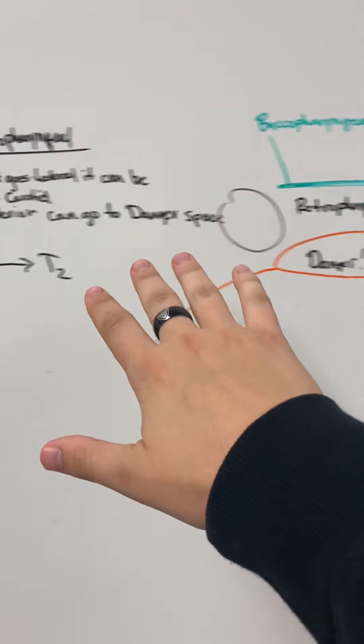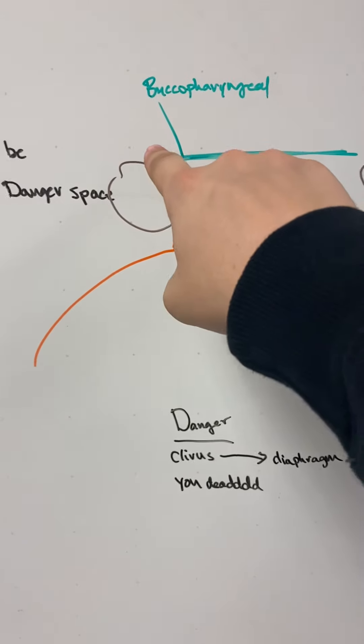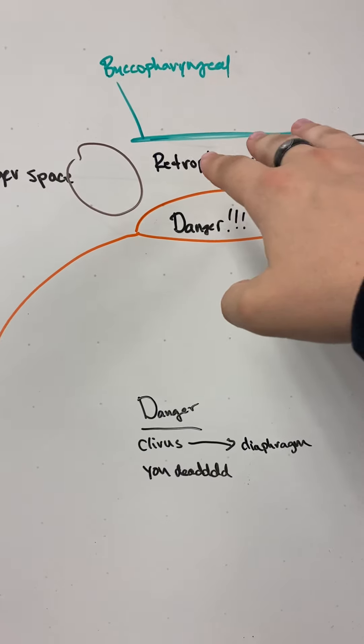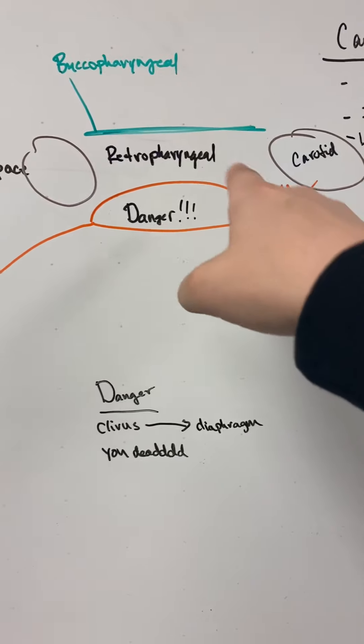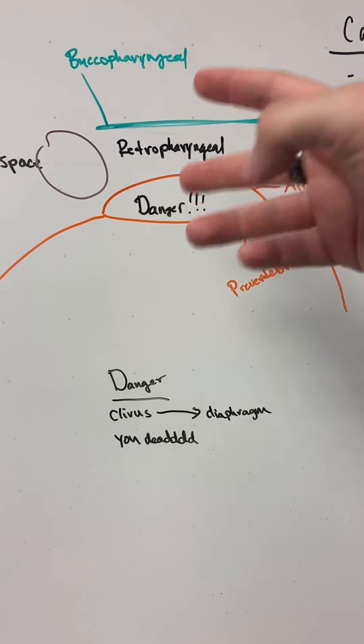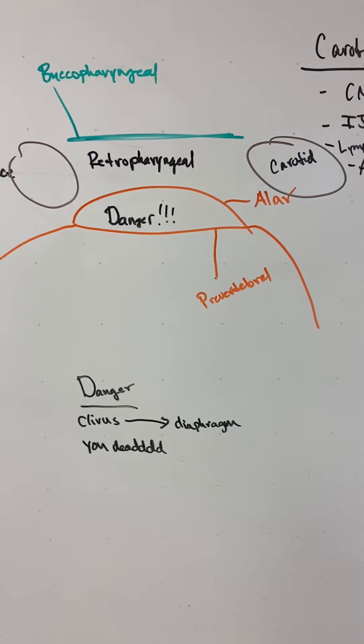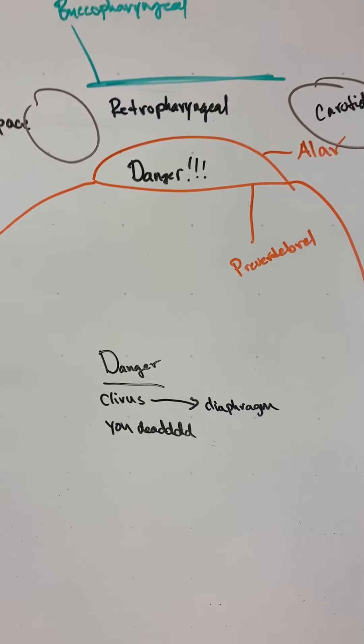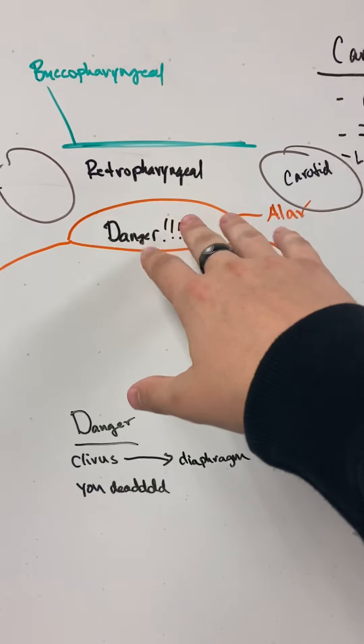So we have the retropharyngeal space. Remember in my last lecture we had that buccal pharyngeal, back of the throat. Between that and the alar, which is this little loop, that's called the retropharyngeal space. It's not the end of the world if infection gets in there, but it could go bad real bad, really quickly.